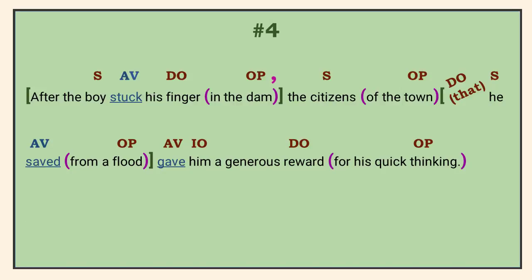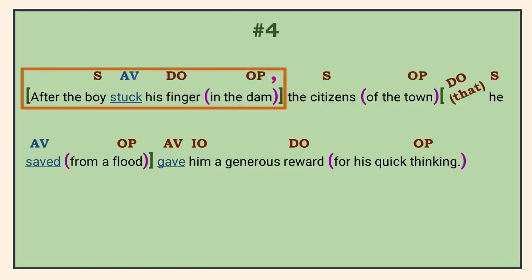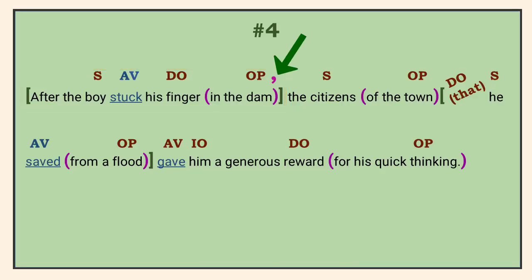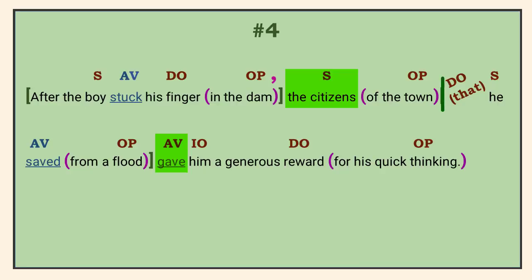Number 4. The sentence begins with a dependent clause that tells why they gave the reward. Use a comma for this opening adverbial clause. We have three subject-verb combinations here: boy stuck, citizens gave, and he saved. The third clause interrupts the second, so we have to look at how they are joined. There is nothing between them, so we should suspect an implied relative pronoun. It is a restrictive clause telling which town — specifically the town he saved, not just some random town. Since it narrows the group of potential towns down to a single one, it is restrictive and doesn't have commas around it.